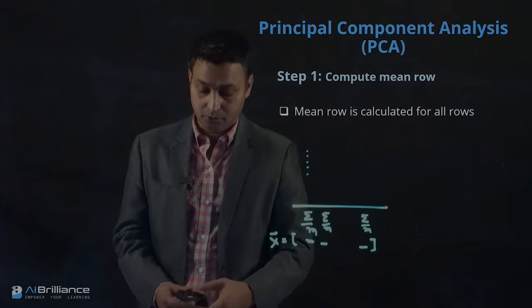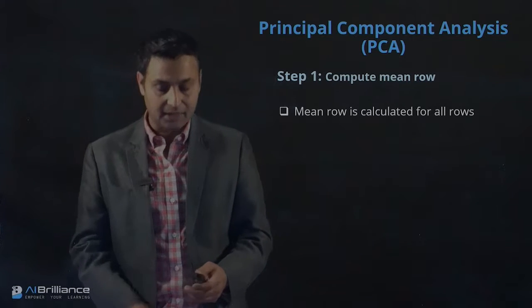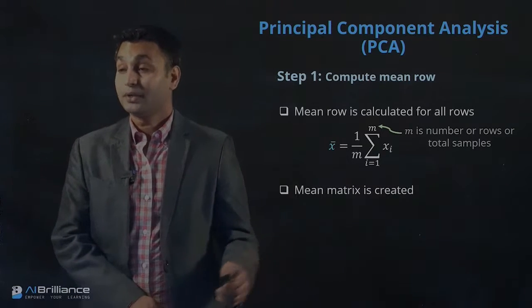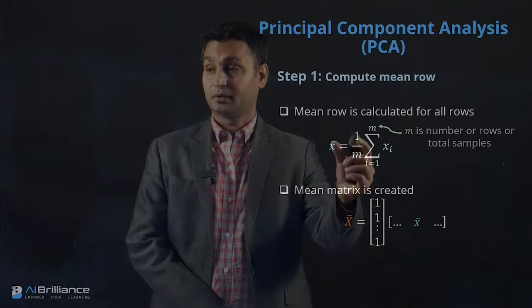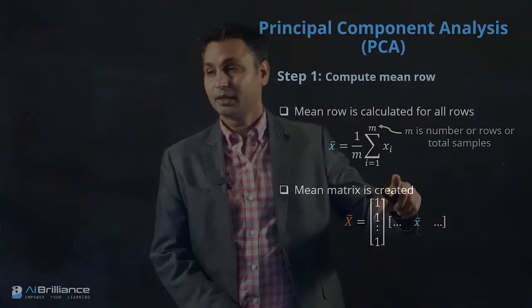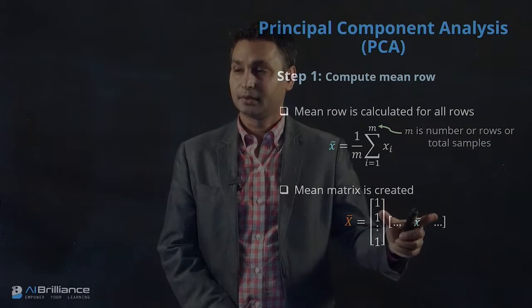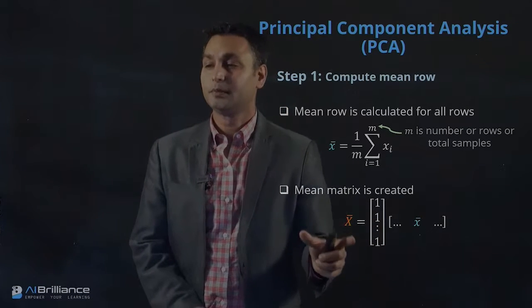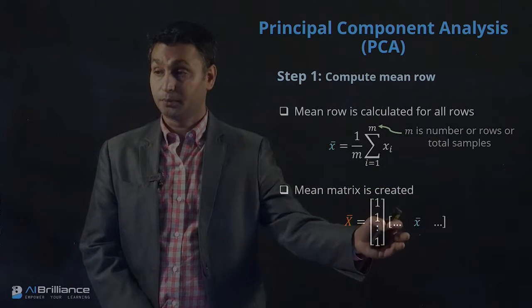This vector is the mean row vector — that's how the mean row computation works. From that vector we can create a mean matrix. The small x_mean is the vector; capital X-bar is the matrix. We take M ones and multiply by the mean vector, essentially replicating x_mean M times — so the same row is repeated M times — giving us the mean matrix X-bar.